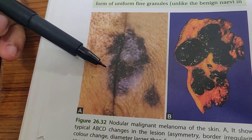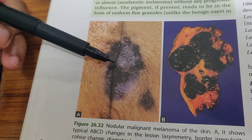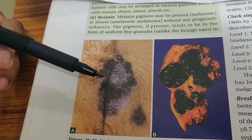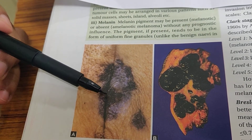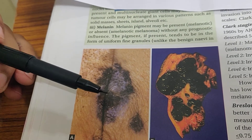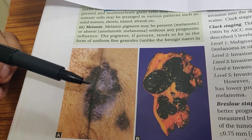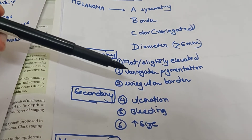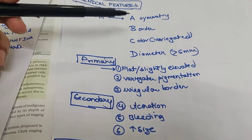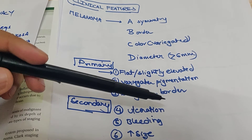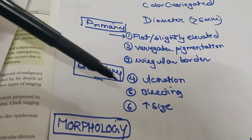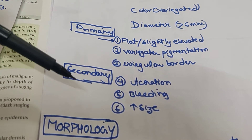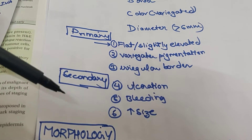This diagram shows a nodular malignant melanoma which follows the ABCD rule — there is asymmetry, the border is irregular, the color is variegated with multiple colors such as black, brownish, and gray, and the diameter is greater than 6 mm. In primary tumors it is flat or slightly elevated with variegated pigmentation and irregular borders, whereas secondary changes include ulceration, bleeding, and increase in size.